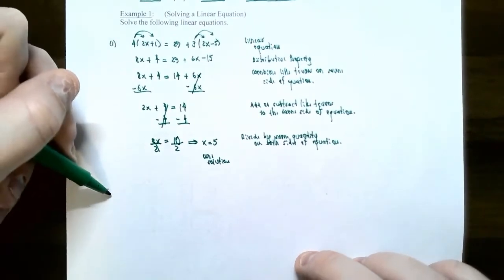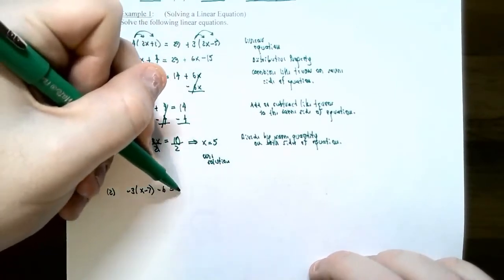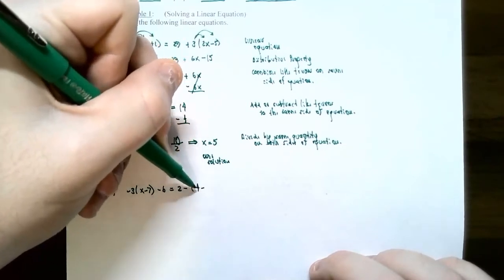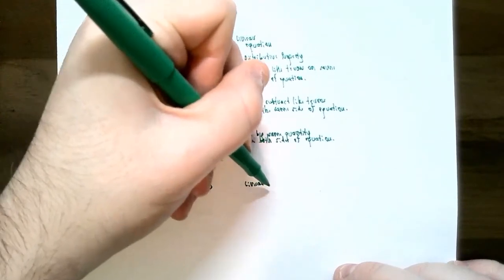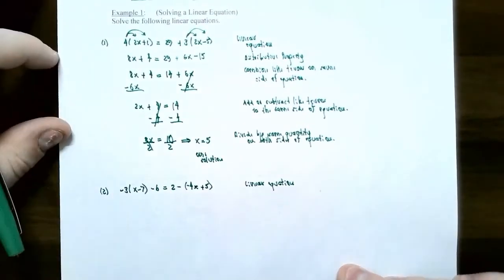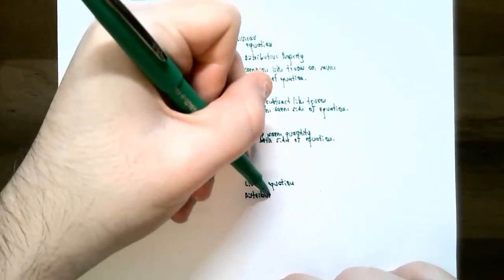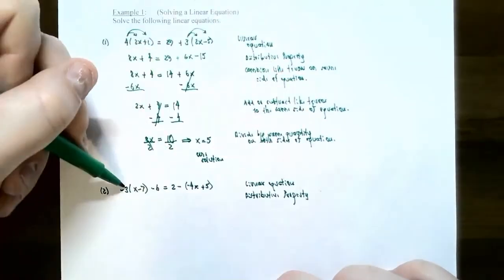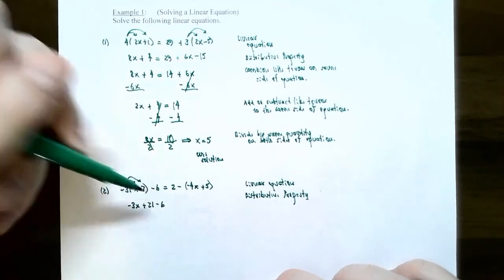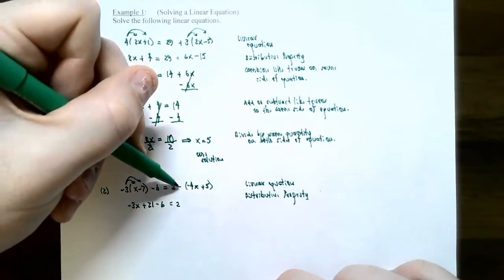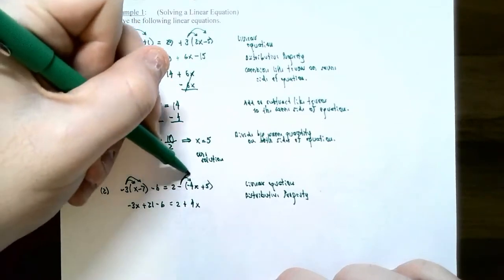Let's try another problem. This time we solve the equation negative 3 times the quantity x minus 7, subtract 6, equals 2 minus the quantity negative 4x plus 5. This is also a linear equation because all x terms are to the first power. Going through the same steps — use the distributive property: negative 3 times x is negative 3x, negative 3 times negative 7 is positive 21. Don't distribute the negative 6 because it's outside the parentheses.